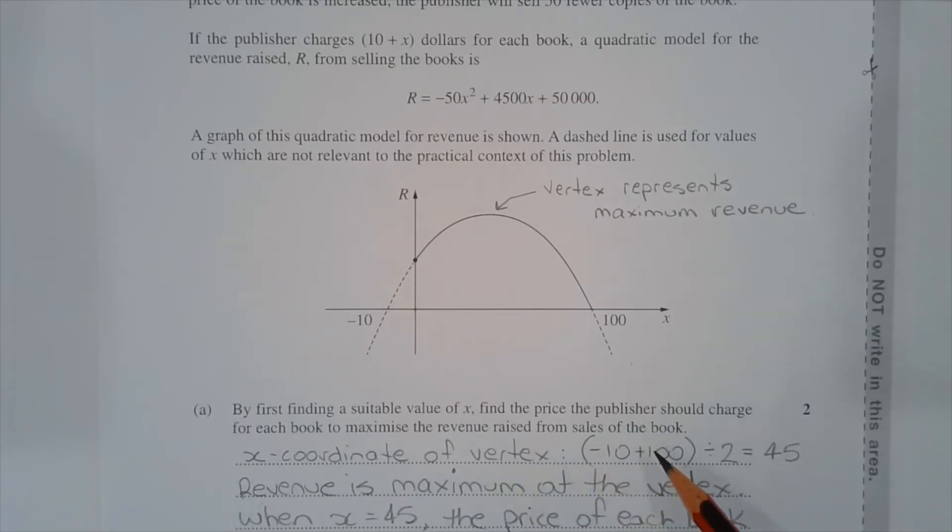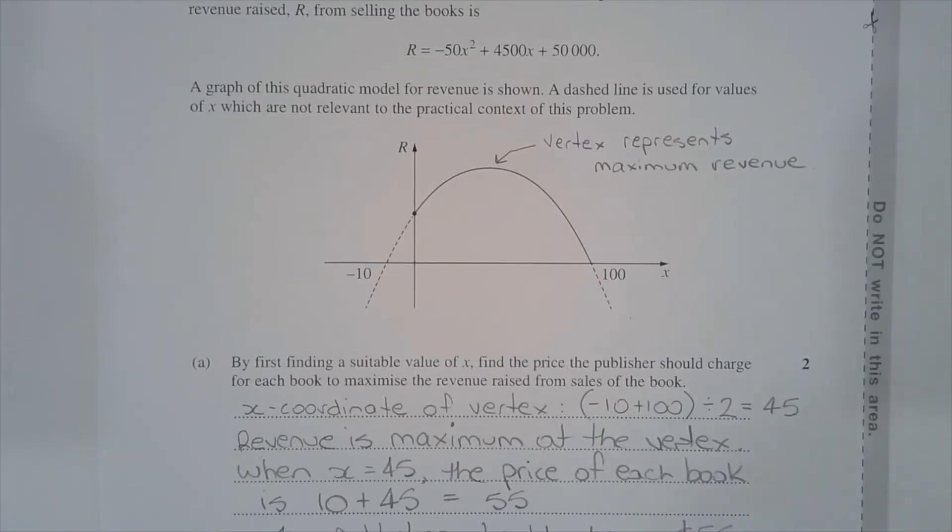So negative 10 plus 100 in brackets divided by 2 equals 45. When X equals 45, the price of each book is 10 plus 45 which equals 55.